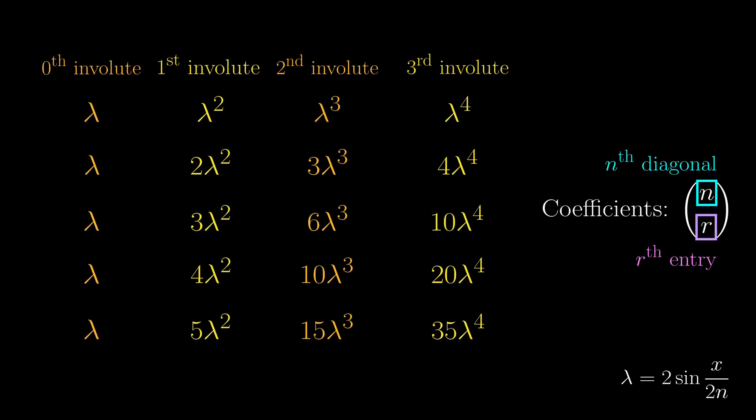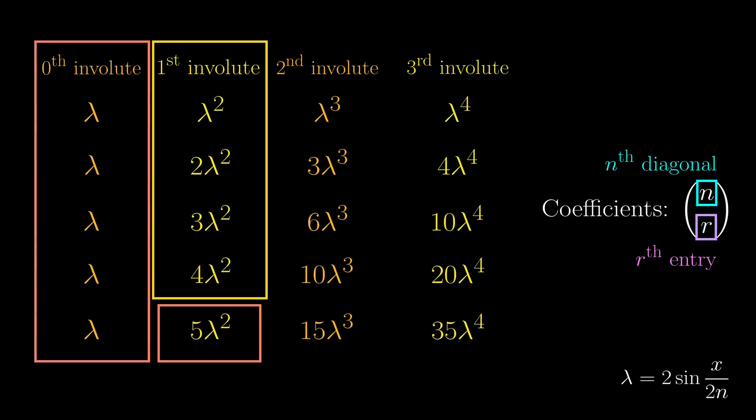However, these are only the lengths of little segments of the involute. To calculate the total length of, say, the 0th involute, we need to add up everything in this column. If we only consider the coefficient, it is 5, the entry to the right. What about the total length of the first involute? It should be adding up the first 4 entries here, because moving from one involute to the next removes one entry, as seen before. Again, this is just the coefficient of the entry to the right.